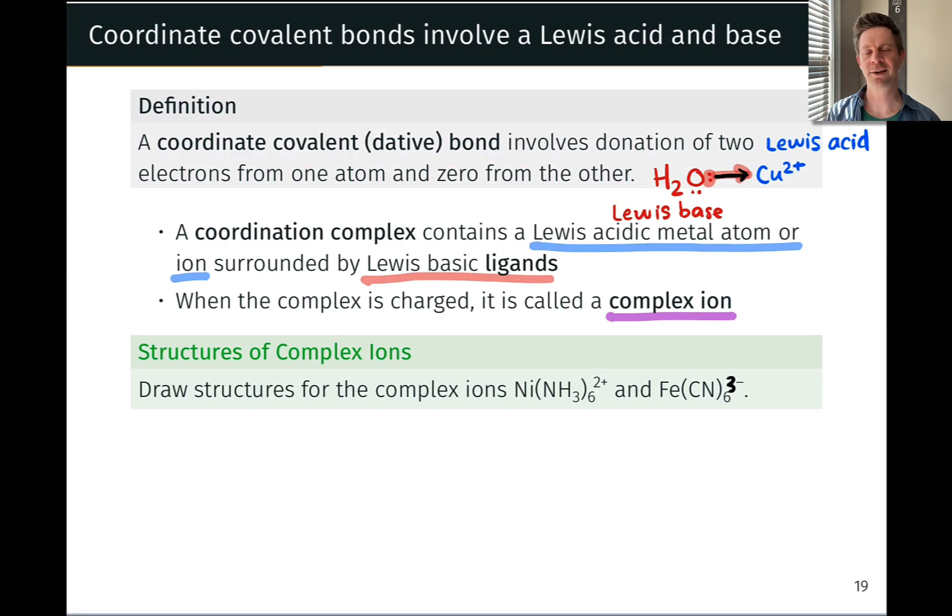But these charges can be positive or negative. Positive is something that you'll see probably more commonly, because the Lewis basic ligands are often formally neutral, and the metal cation is positively charged, so the net charge is positive. But when anionic ligands are involved, we can also get negatively charged complex ions. You'll see both, and we're going to look at examples of both in the bottom half of this slide.